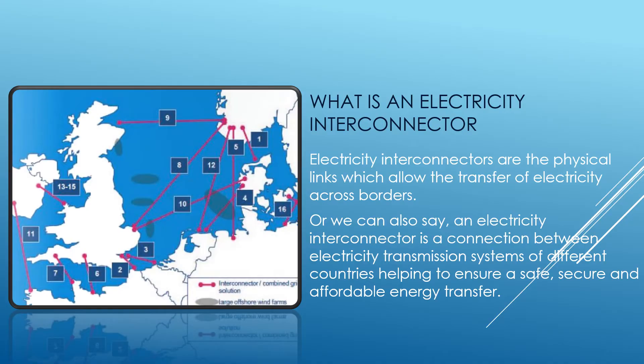So what is an electricity interconnector? Electricity interconnectors are the physical links which allow the transfer of electricity across borders. We can also say an electricity interconnector is a connection between the electricity transmission systems of different countries, helping to ensure a safe, secure, and affordable energy transfer. The picture shown covers interconnectors between the UK and various European countries.